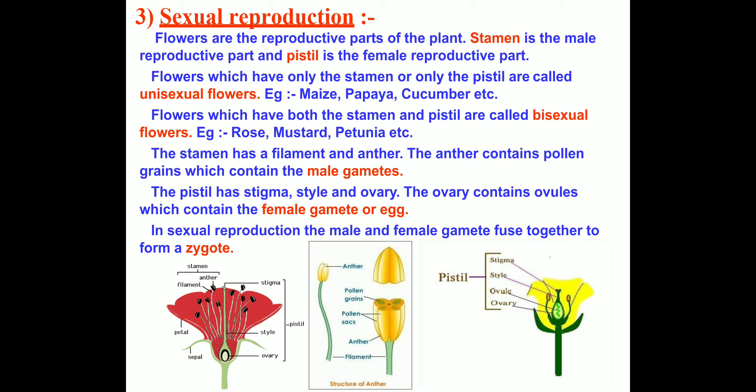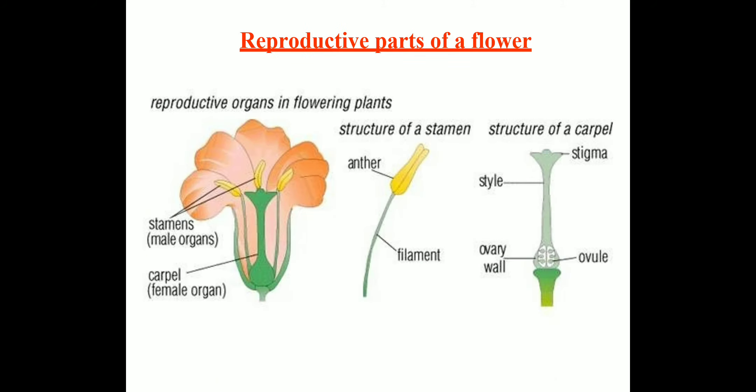These figures clearly show the parts of a bisexual flower. Now, looking at the reproductive parts of a flowering plant — stamen is the male organ and carpel is the female organ, as you can clearly see in this picture. Stamens are yellow in color and carpel is shown in dark green color.